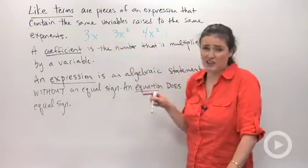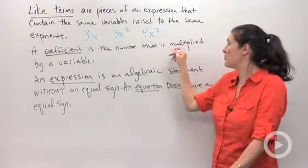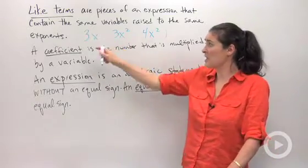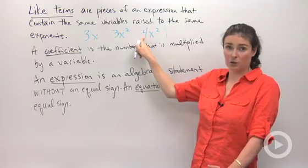Those big numbers out front actually have a name, and they're called coefficients. A coefficient is the number that is multiplied by a variable. So in these problems, the coefficient was 3, that coefficient was 3, that coefficient is 4.